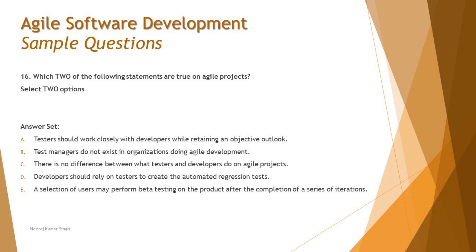Moving to question 16 — as mentioned before, some questions require you to select two options. This question has five options and clearly states 'select two.' Which two of the following statements are true on agile projects? Statement one: a tester should closely work with developers while retaining an objective outlook. This is absolutely right — being a good agile tester means maintaining your unique end-user perspective while still collaborating with developers.